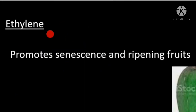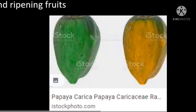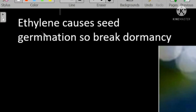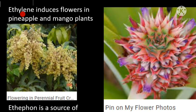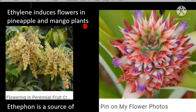Ethylene is a growth regulator that can be both a growth promoter and a growth inhibitor. It can promote senescence and lead to ripening of fruits. Ethylene also causes seed germination by breaking dormancy of seeds, making it a growth promoter in that way. Ethylene induces flowers in pineapple and mango plants.